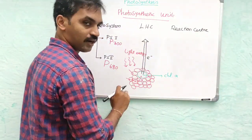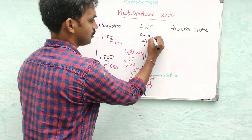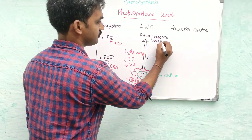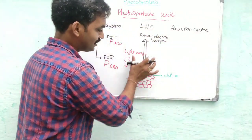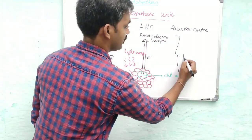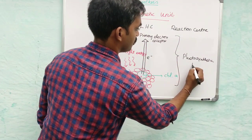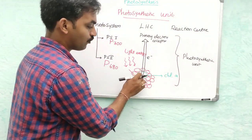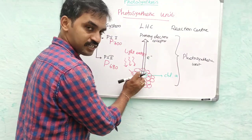The expelled electrons are absorbed by the primary electron acceptor. This is the photosynthetic unit, where chlorophyll a at the center ultimately absorbs light and the light reaction starts.